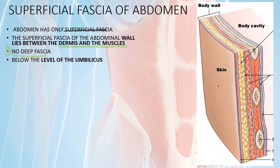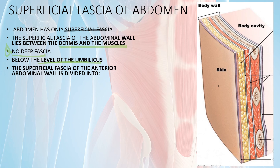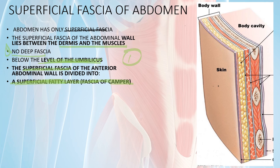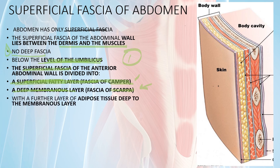The superficial fascia above the level of umbilicus has one layer. Below the level of umbilicus it has two layers: the superficial fatty layer known as Camper's fascia, and the deep membranous layer known as Scarpa's fascia. As per Grace, there is a third layer of adipose tissue below the membranous layer. So we have three layers of superficial fascia in the abdomen, and we don't have a deep layer.